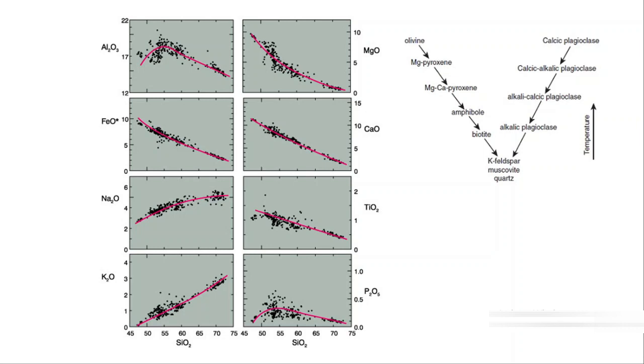This diagram is particularly of the Crater Lake of Mount Mazama. A scientist took 310 samples and plotted all the data—all the compositions of major elements of those 310 samples.